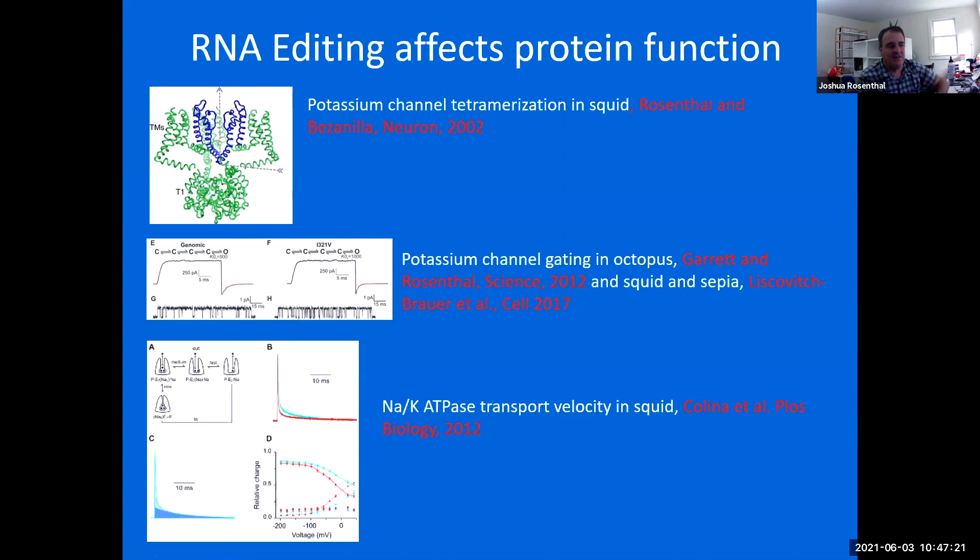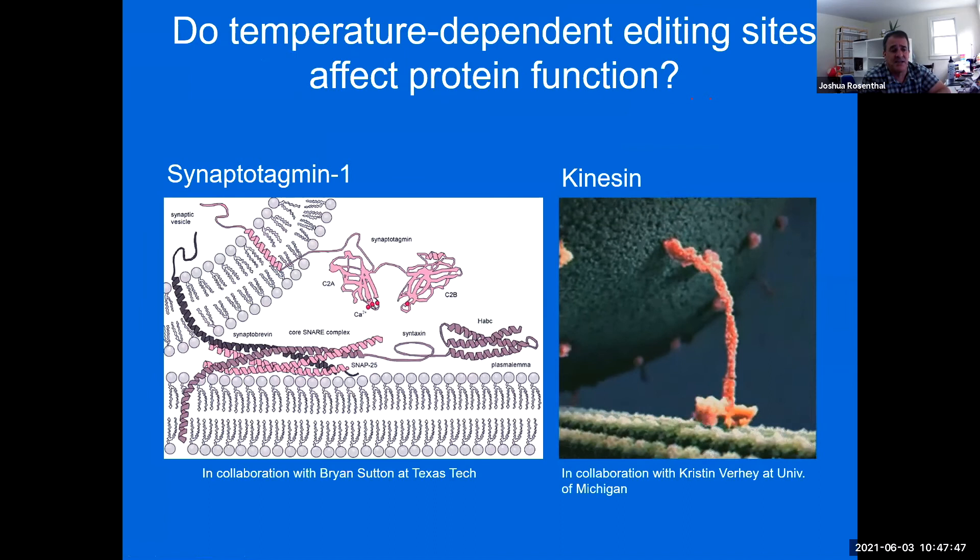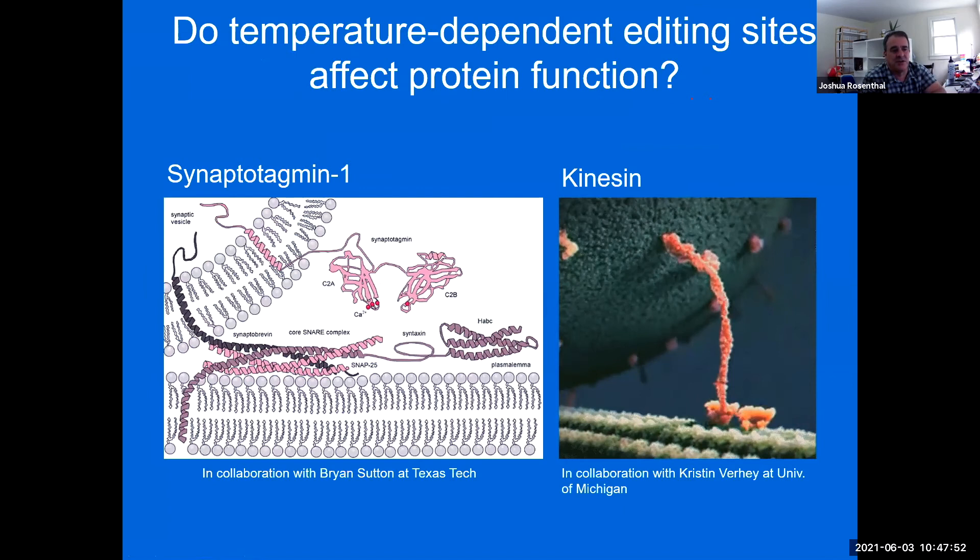We have a lot of publications in the past, looking at the effects of individual editing sites on protein function. We've seen that it can affect tetramerization in potassium channels or gating characteristics of potassium channels or the transport velocity in the sodium potassium ATPase. Here are a couple of examples, but today I wanted to give you a quick run through on two sites that I find really exciting. These are two temperature sensitive sites in messages encoding proteins that are very important for nervous system function.